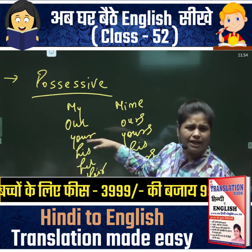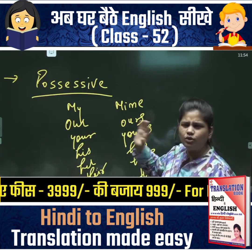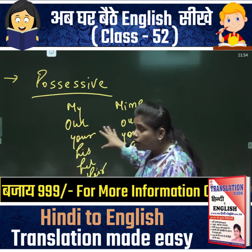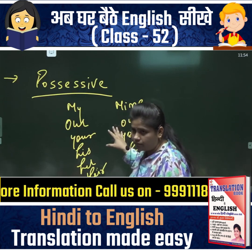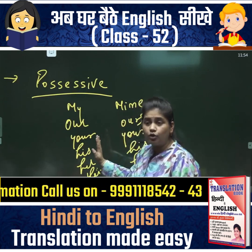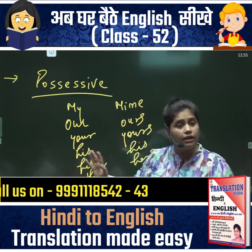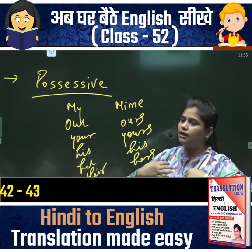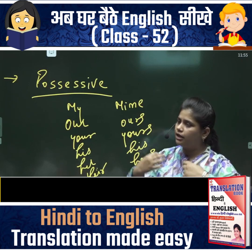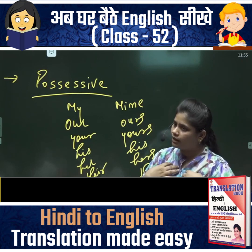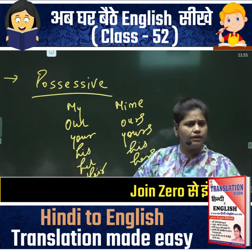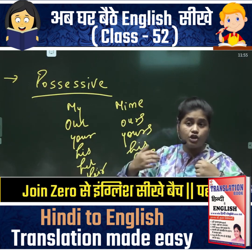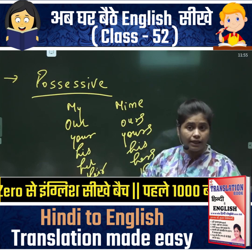Ab paper mein kaise aayega? Dekho, ye toh hum samajh gaye — kin shabdon ka kaam hai adhikar dikhana. Ye kahin bhi aayenge toh kya dikhayenge? Adhikar dikhayenge — mera kahenge, humara kahenge, uska kahenge. Possession ki feeling aayegi ya relation ki feeling aayegi.